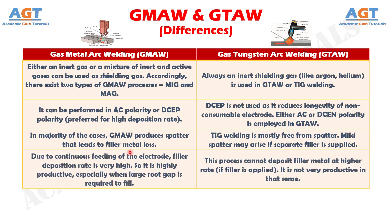Number eight: in gas metal arc welding, due to continuous feeding of the electrode, the filler deposition rate is very high, so it is highly productive, especially when a large root gap is required to fill. Whereas the gas tungsten arc welding process cannot deposit filler metal at a higher rate if filler is applied, and it is not very productive in that sense.